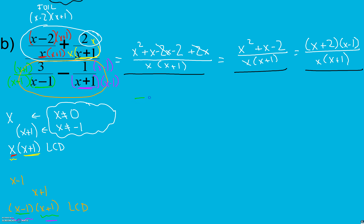My denominator is my common denominator (x plus 1)(x minus 1). In my numerator I distribute: 3 times (x plus 1) gives me 3x plus 3. Don't forget we're subtracting, so that subtraction applies to both terms — it's like negative 1 times x and negative 1 times negative 1, which gives a plus 1. Combining like terms I get 2x plus 4 over my common denominator. I can factor out a 2 from the numerator, leaving (x plus 2) over (x minus 1)(x plus 1).